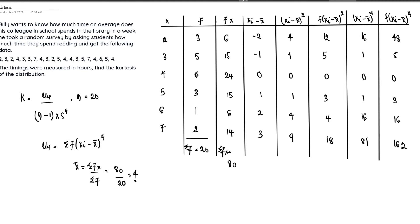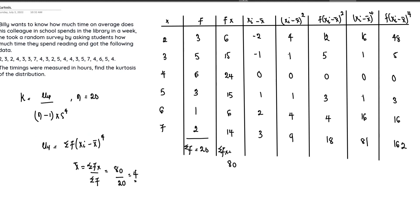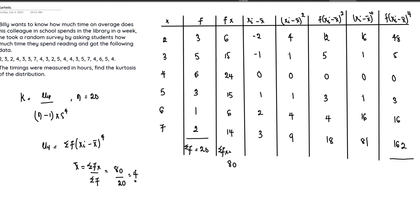Now we have all the necessary details to get the fourth moment. The formula is summation of f times (xi minus x-bar) raised to the power of four. Summing all values: 48 + 5 + 0 + 3 + 16 + 16 + 162 = 234. So summation of f(xi − x-bar)⁴ equals 234, which is the value of the fourth moment.